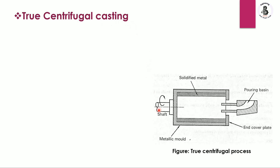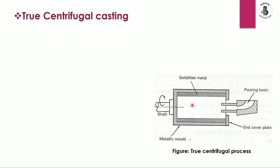In the basic setup of true centrifugal casting, a shaft is connected with a drive mechanism and rotates at high speed. A metallic mold is attached onto this shaft and rotates with it. On the other side is the pouring basin, where molten metal is poured via a ladle into the rotating mold, and the end cover plates seal the mold. Due to centrifugal force on the inner surface, the metal solidifies and forms a hollow casting without using a core.